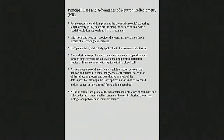For neutron reflectometry, we can study the chemical properties of the material we're interested in, and with polarized neutrons, the magnetization properties. We can take advantage of the isotopic contrast — especially by hydrogen-deuterium substitution. The probe is non-destructive; it goes through large quantities of macroscopic distances of surrounding environmental materials like cryostats and pressure cells.